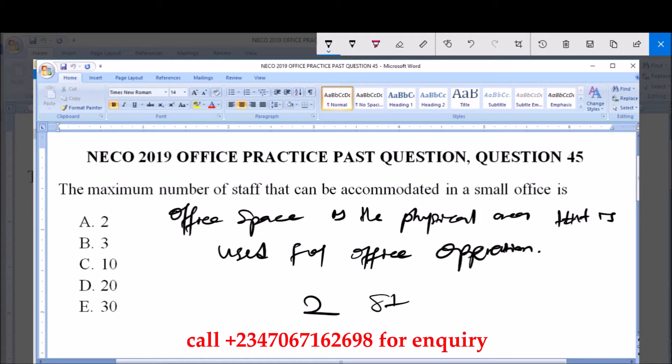Two staffs. So, the maximum number of staff that can be accommodated in a small office space or in a small office is 2. And that is option A2.